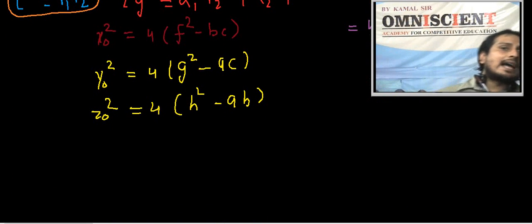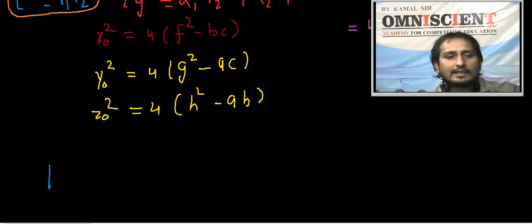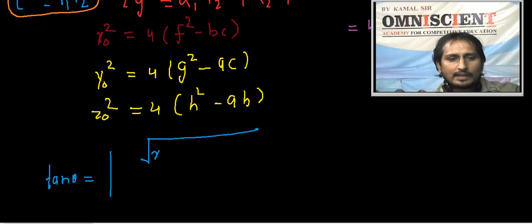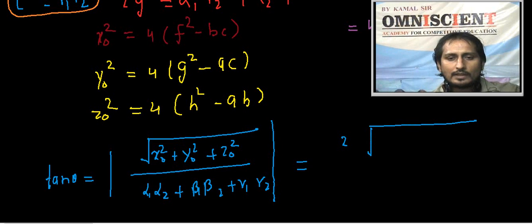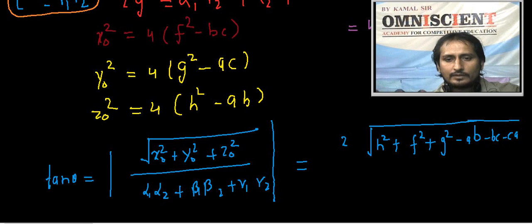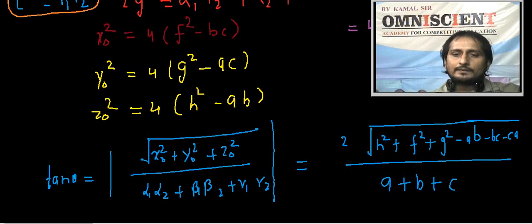तो finally tan θ = √(x₀² + y₀² + z₀²) / (n1·n2) = 2√(f²-bc + g²-ca + h²-ab) / (a+b+c) = 2√(h²+f²+g²-ab-bc-ca) / (a+b+c). यही हमें prove करना था।